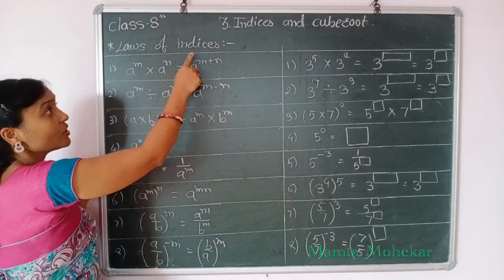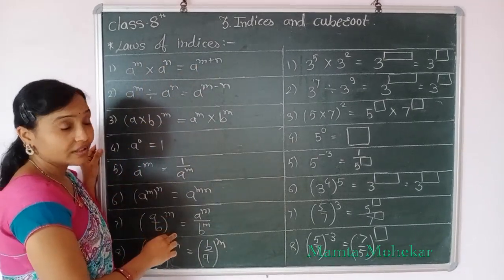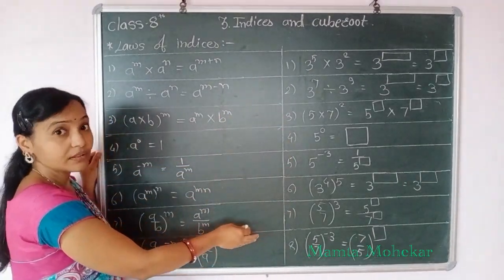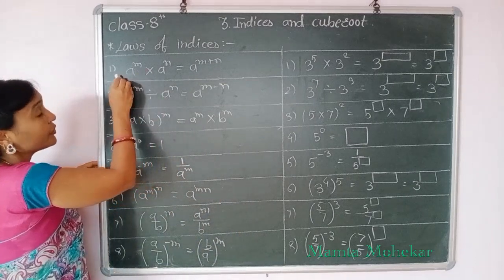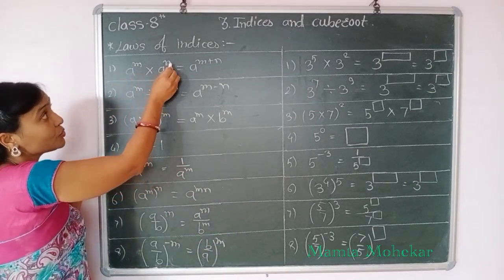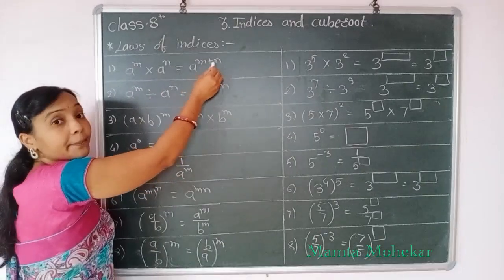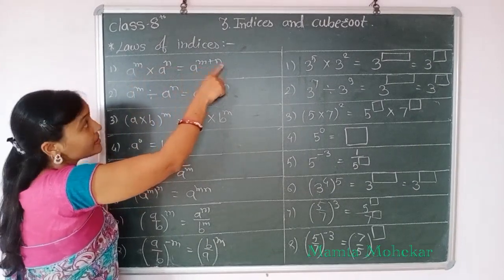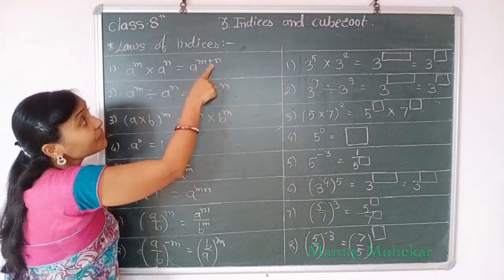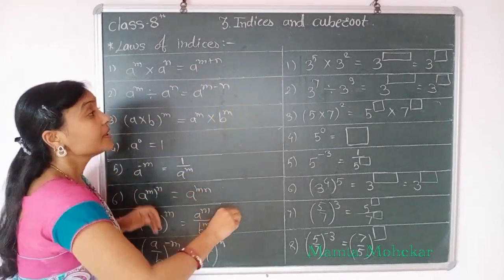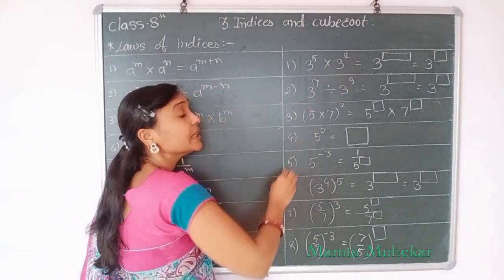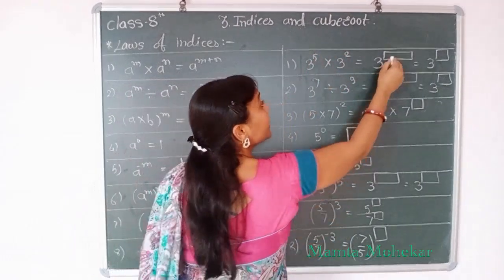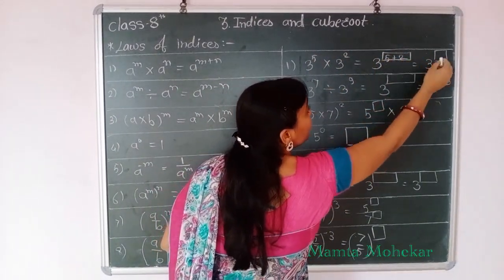Now we see laws of indices. These laws are given in our textbook along with examples we have to solve. Our first rule is: A raised to power M into A raised to power N equal to A raised to power M plus N. Means if the bases are same, then we do addition of indices. Example: 3 raised to power 5 into 3 raised to power 2. Same base is 3, so we add the indices: 5 plus 2 equals 7.